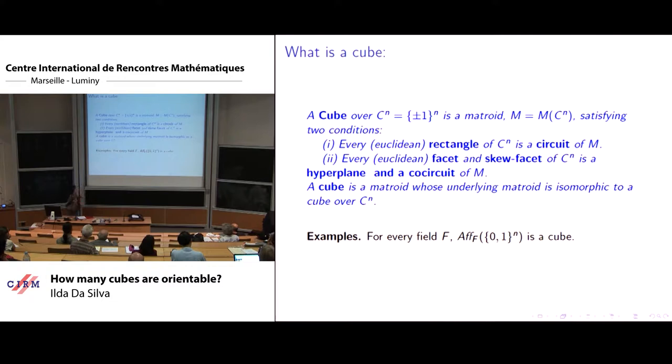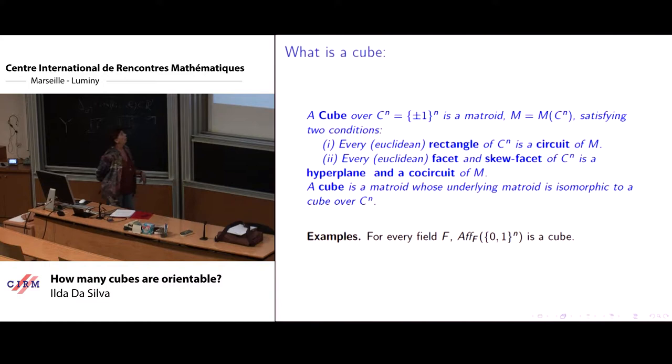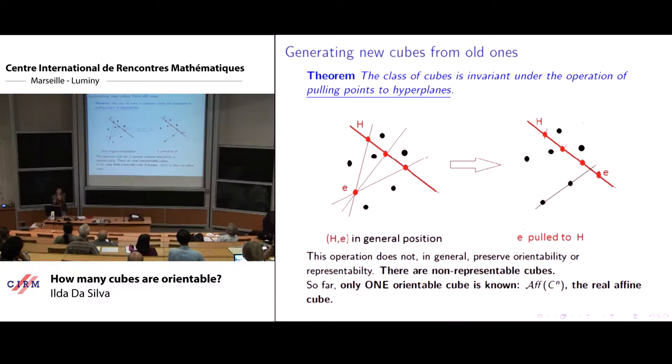must be a circuit of the matroid. The other one is that every Euclidean facet and skew facet of C^n must be a hyperplane and a co-circuit of the matroid. A cube is any matroid whose underlying matroid is isomorphic to one of those. Immediate examples of cubes are the matroids of affine dependencies of the 0-1 vectors over any field.